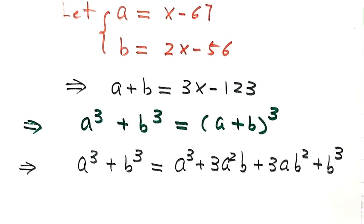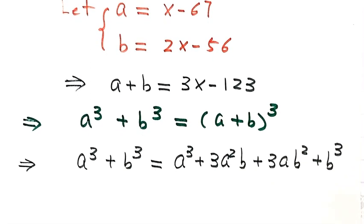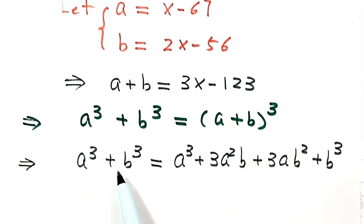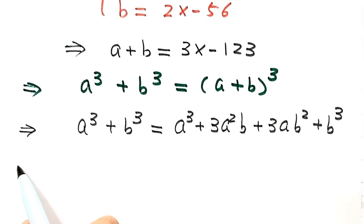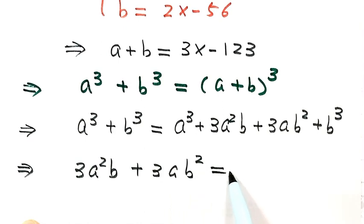Next, we simplify by noticing that we have a to the third plus b to the third on both sides of the equation. So they cancel out. So this leaves us with this term, 3a squared b plus 3ab squared, then equals zero.